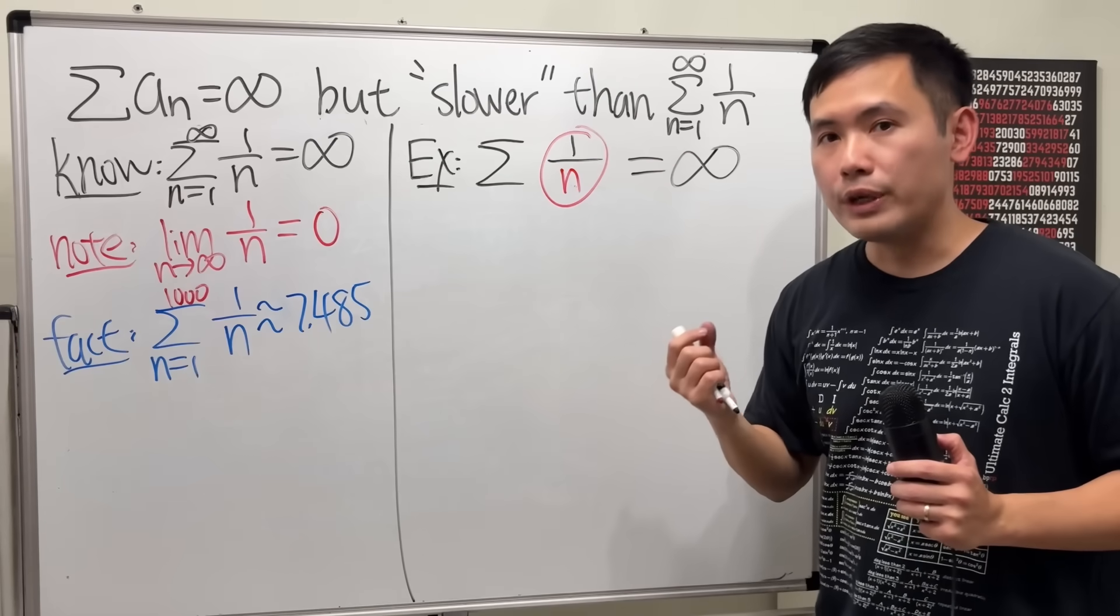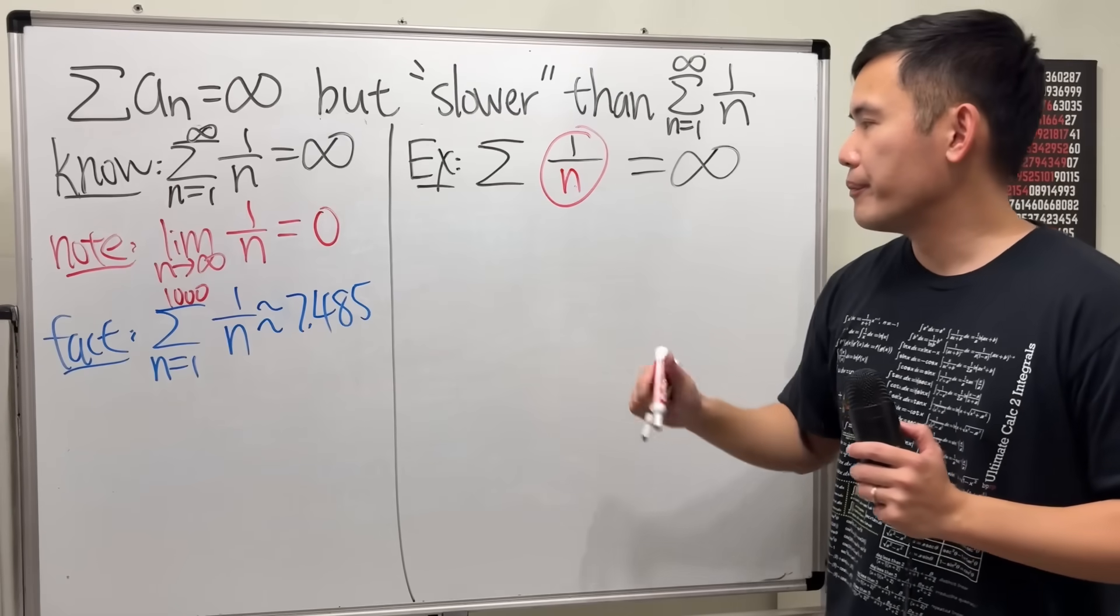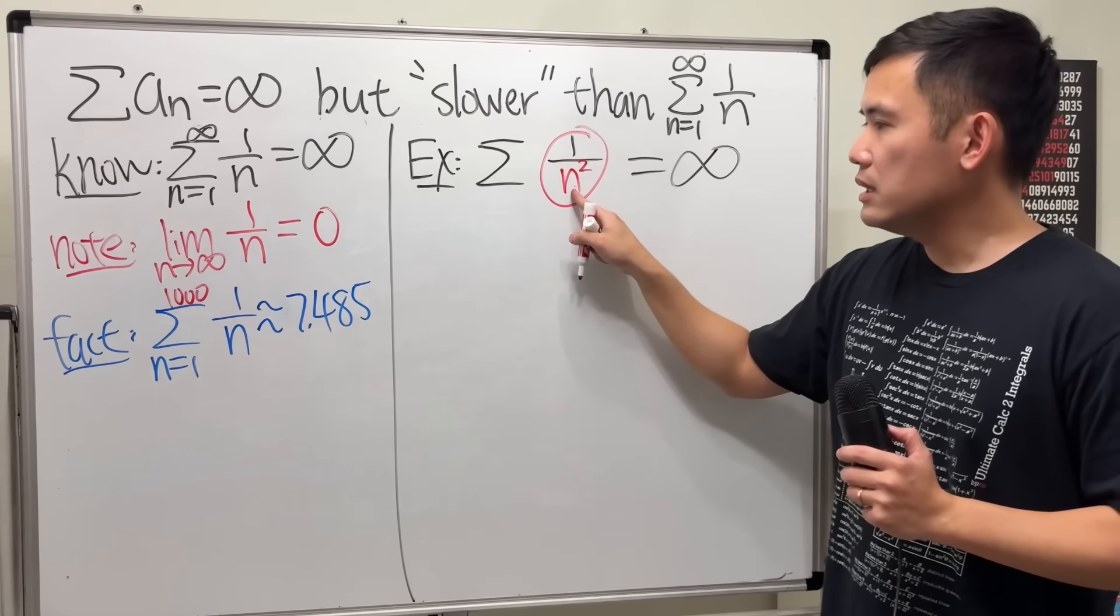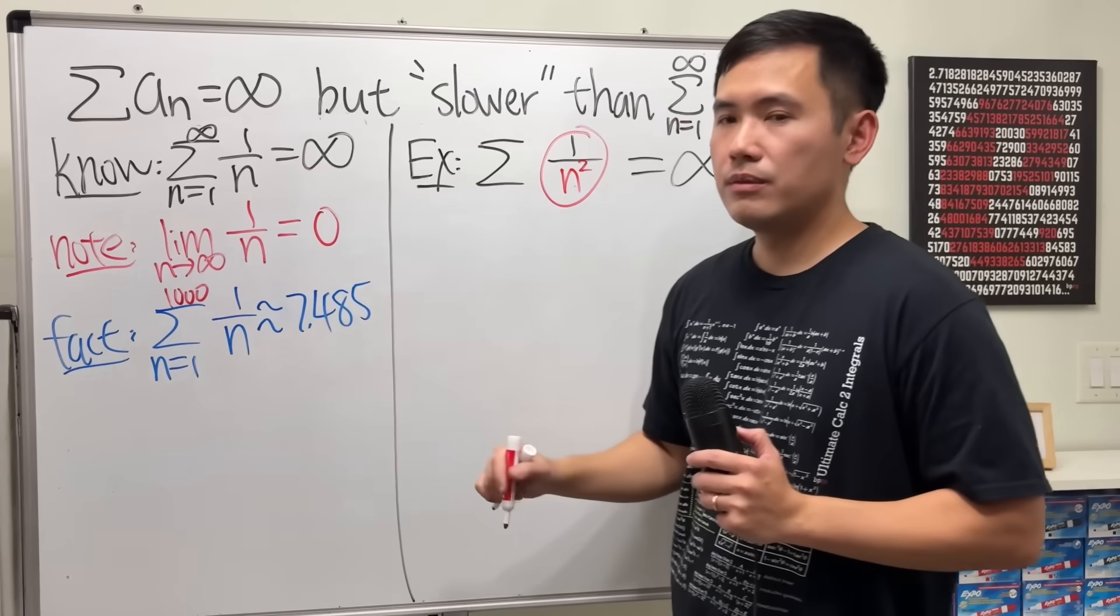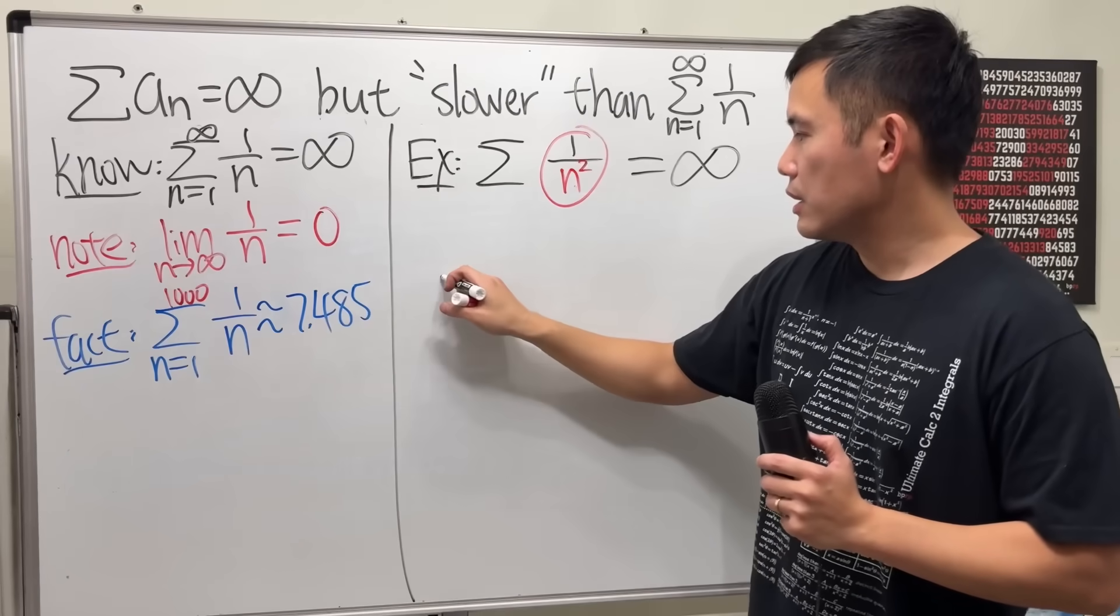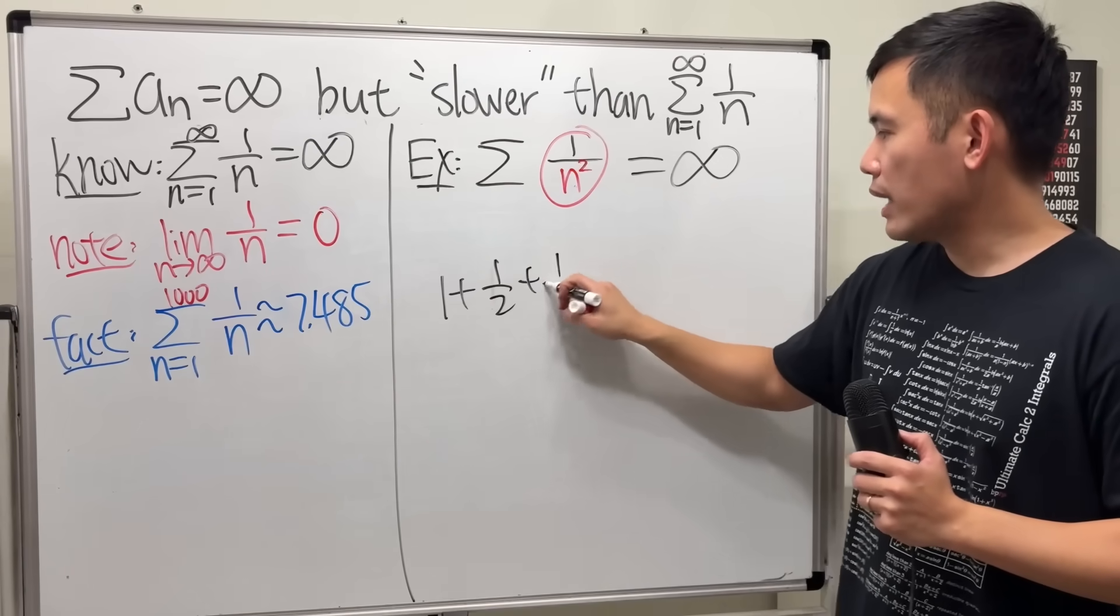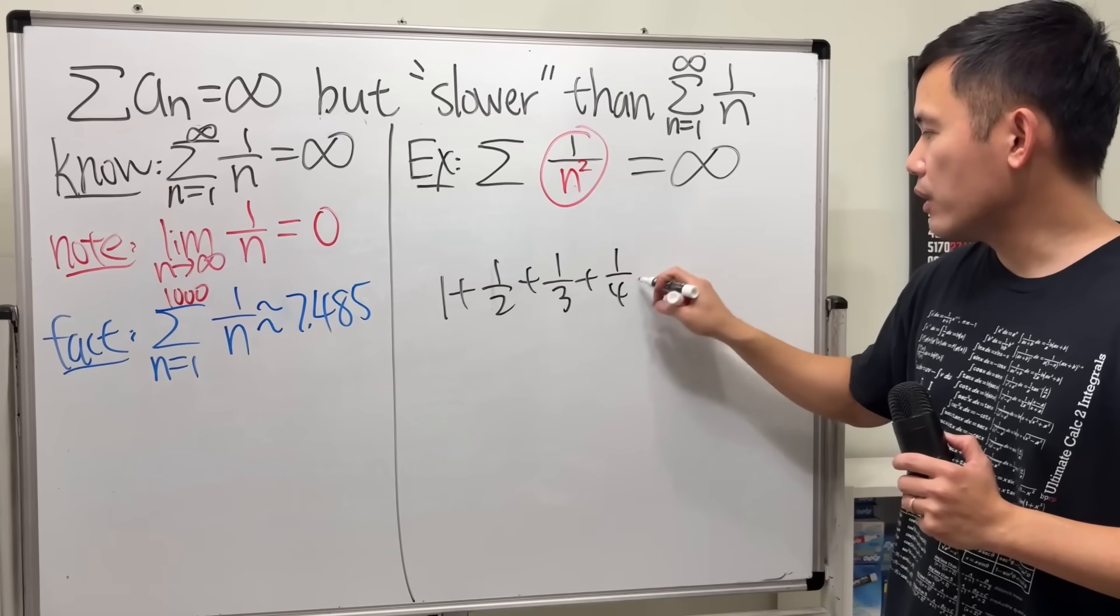Now, we want this to be small, but it cannot be too small either. For example, if I pick this to be n squared, this is smaller than that. What I mean by that is this.